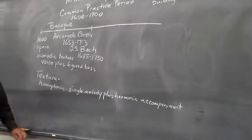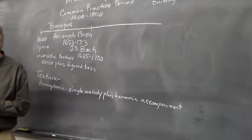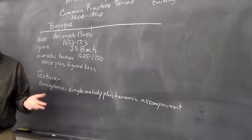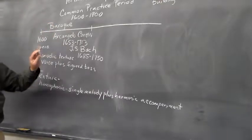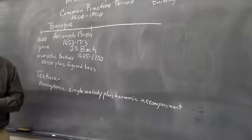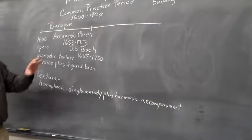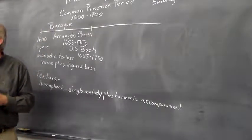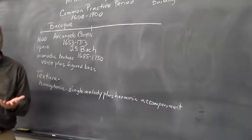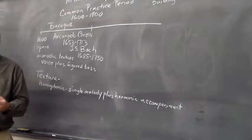Bach is seen as the composer who was the culminator of the Baroque style — the one who wrote the greatest masterpieces in all the different genres that had arisen in the Baroque period. This was a time of change in the 17th century, with new genres being developed and the rise of instrumental music. Music from the Renaissance was primarily vocal music, but with the Baroque, composers started writing music for specific combinations of instruments.